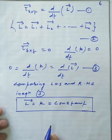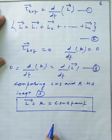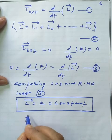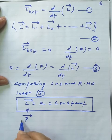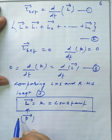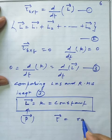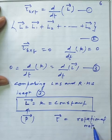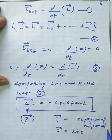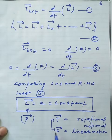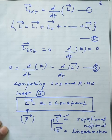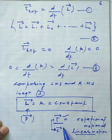Angular momentum L is the analog of linear momentum P in rotational motion. Torque is the rotational analog of force F in linear motion. Whenever someone asks what force means in rotational motion, the answer is torque — it is a force but it creates a rotating impact on the body. In linear motion, if you want to displace something, you use force; in rotational motion, torque plays that role.